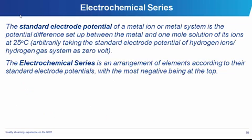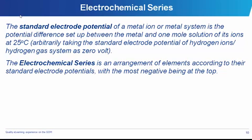The electrochemical series is an arrangement of elements in accordance with their standard electrode potentials, with the most negative at the top and the least negative at the base. The electrode potential of a metal ion or metal system is the potential difference set up between the metal and one molar solution of its ions at 25 degrees C. Hydrogen, being a reference element, has a voltage of zero — it is used as the standard. Those with higher reduction potentials have positive values, and those with lower have negative values.